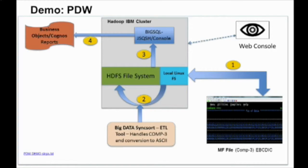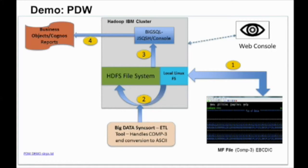To move the file into HDFS, we're going to use a tool called Syncsort. As Sesh pointed out, this is not the mainframe Syncsort utility — that was a PGM equal to Syncsort that did sorting. This Big Data Syncsort does a great job handling COMP3 data and converting to ASCII. It comes with a GUI, so you don't have to write any code. If you've worked on Informatica or DataStage, it's very familiar. Then we'll read the file that we moved into the HDFS file system and create a table definition on top of it.